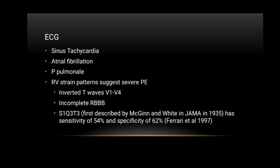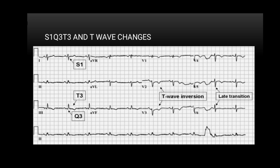ECG will show sinus tachycardia, which is the most common presentation. It may also show atrial fibrillation, P-pulmonale, or right ventricular strain patterns suggestive of severe pulmonary embolism, including inverted T waves from V1 to V4, incomplete right bundle branch block, or the classical S1-Q3-T3 pattern. This slide shows the classical S1-Q3-T3 pattern along with classical T wave changes in V1, V2, V3, and V4.